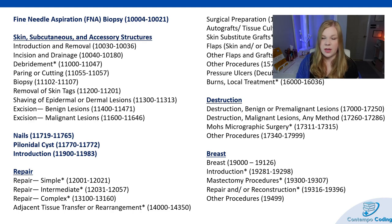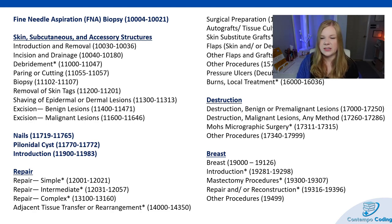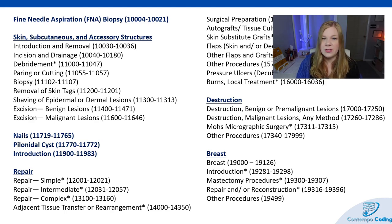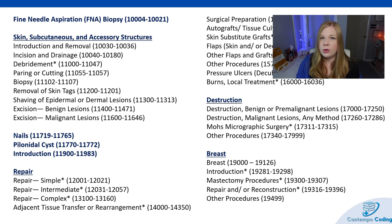Then we have repair codes, broken down by simple, intermediate, and complex. A simple closure is a one-layer closure; intermediate is a layered closure, or it could be a one-layer closure where there was extensive debridement. Complex requires more than layered closure, such as extensive undermining. If you have wounds being repaired in the same classification — all intermediate or all in the same CPT classification — you can group the lengths together.